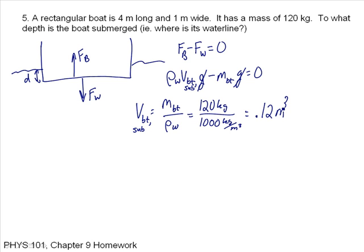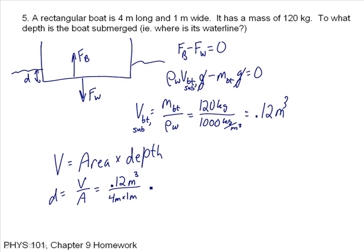Now I want to figure out, I want to translate that into a depth. Now the volume is equal to the area times the depth. So I want to solve for the depth. I'm just going to say D is equal to V over A. V is 0.12 cubic meters. The area is 4 meters by 1 meter, so that's 4 square meters. And that's equal to 0.03 meters, or 3 centimeters. So this distance is 0.03 meters.